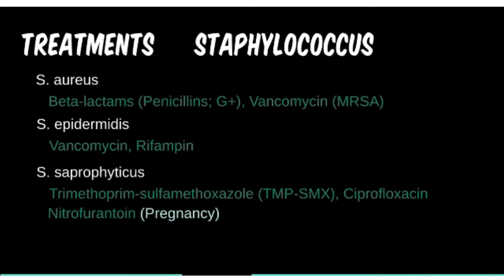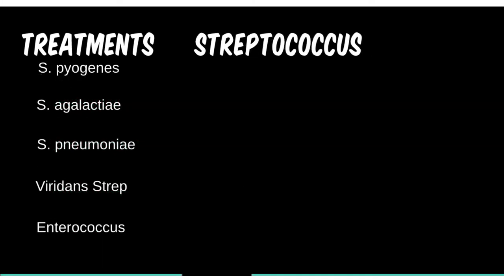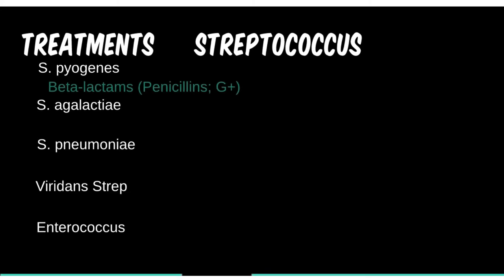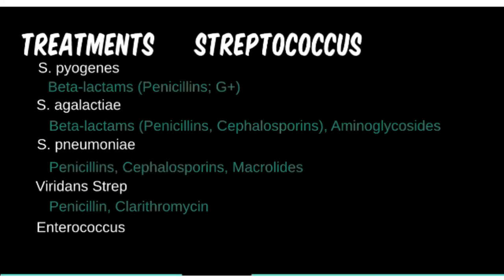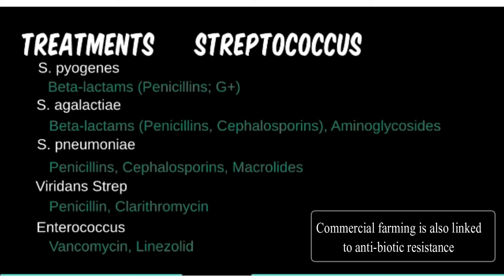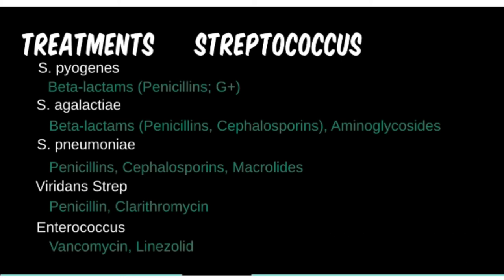Most Strep species are less resistant to conservative treatments and seem to be less promiscuous than their fellow gram-positive cocci. In fact, all Strep species — minus Enterococcus — are still sensitive to penicillin-class antibiotics. You are less likely to see an exam question regarding treatment of these, but if you do, they may ask about the odd one out: Enterococcus. This organism is not only resistant to penicillins but most strains are resistant to vancomycin as well, making the next drug in the lineup linezolid. Don't confuse effectiveness with strength — vancomycin is not necessarily stronger than a penicillin, and linezolid not stronger than vancomycin; it just has to do with the order in which they are discovered, overused, and how fast new drugs can be developed.